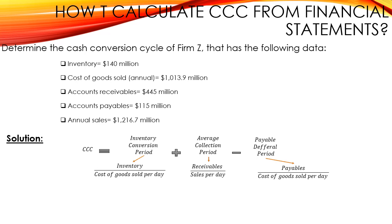The inventory amount is given in the exercise: $140 million. However, the cost of goods sold per day is not given — what is given is the annual cost of goods sold. So we need to determine the cost of goods sold per day by dividing the annual amount by 365 days. So the cost of goods sold per day is $2.777 million.